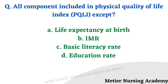All components included in the Physical Quality of Life Index (PQLI), except: options are life expectancy at birth, infant mortality rate, basic literacy rate, and education rate. The right answer is option D, education rate. All other options — life expectancy at birth, infant mortality rate, and basic literacy rate — are components of PQLI.